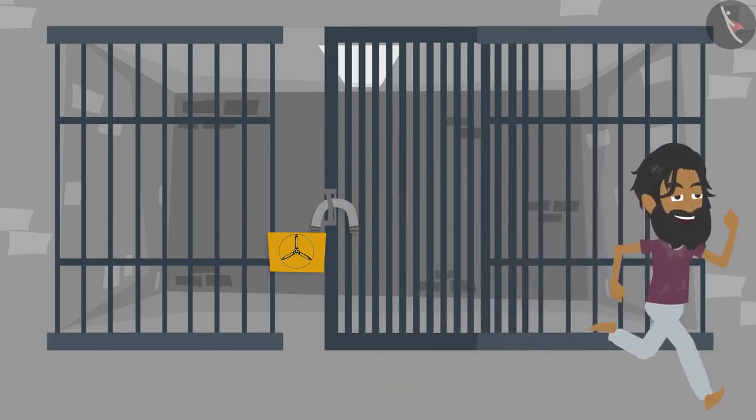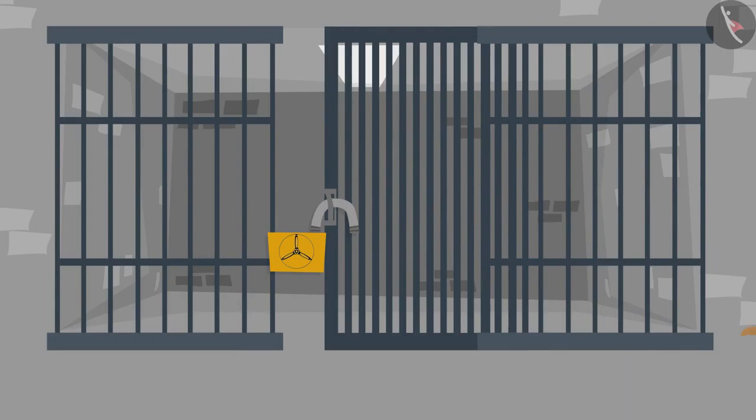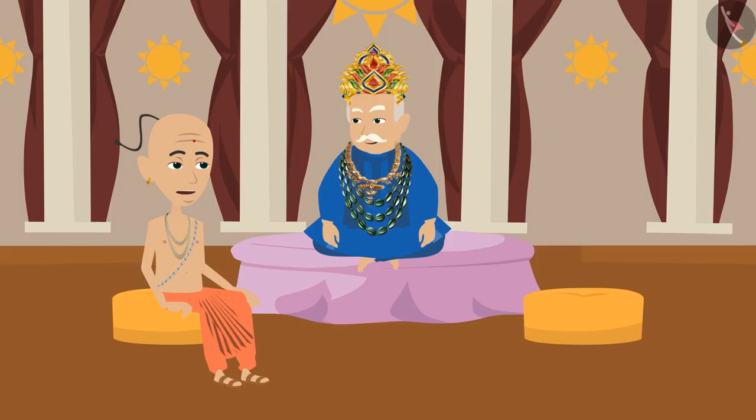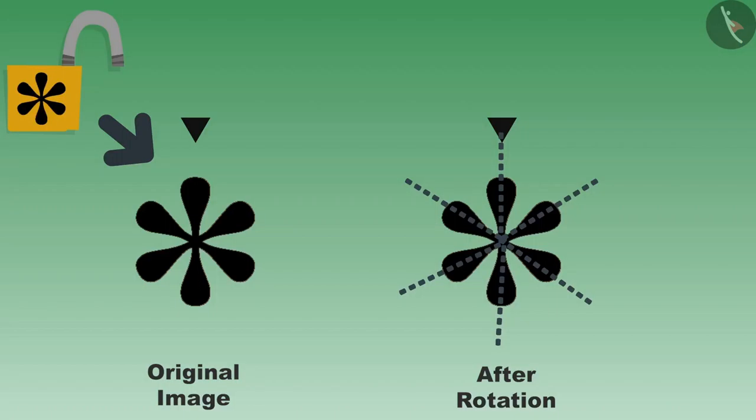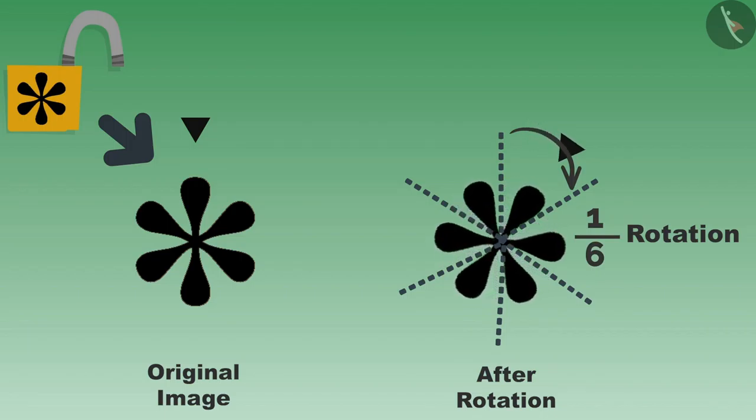When the lock was replaced, the shape of the new lock was like this. One-sixth rotation was needed to close this lock.